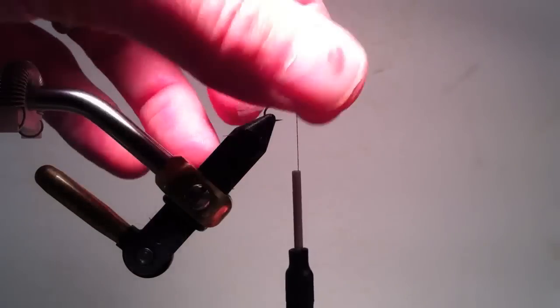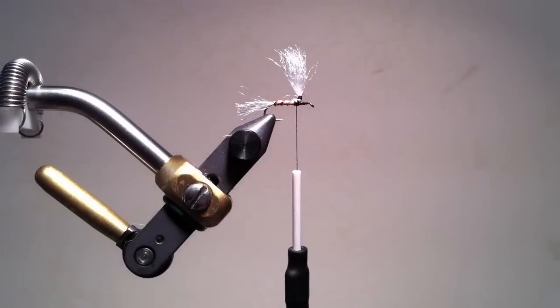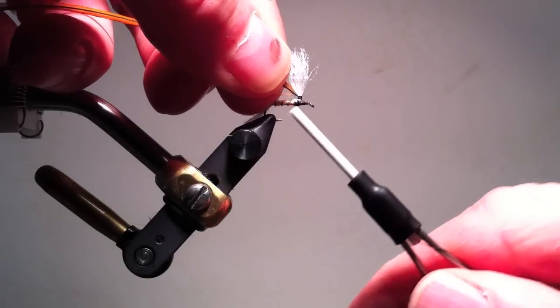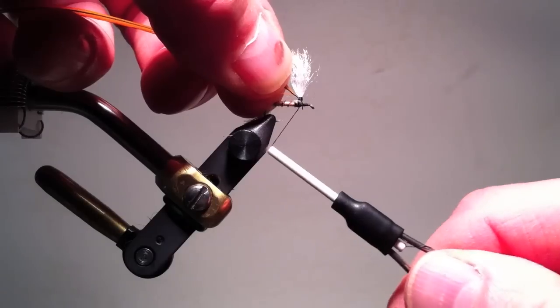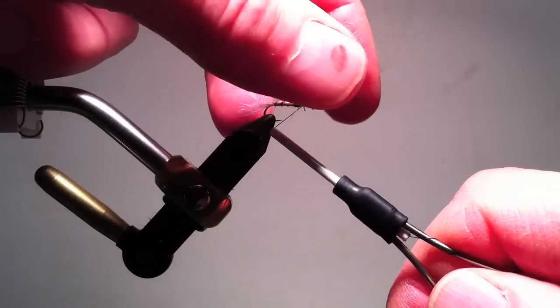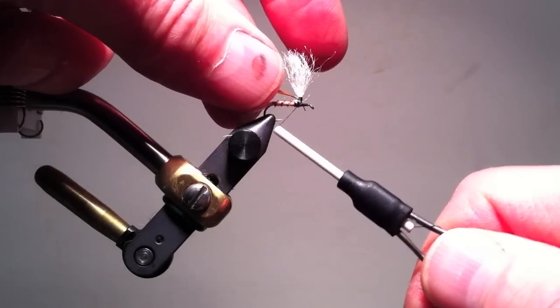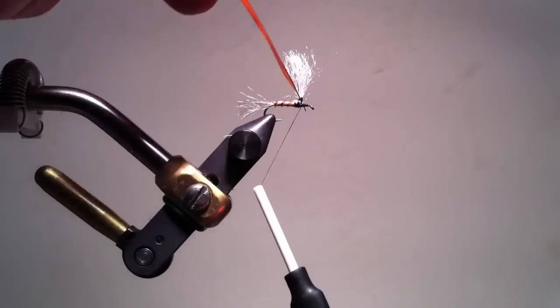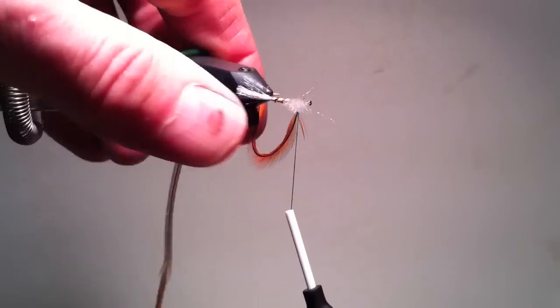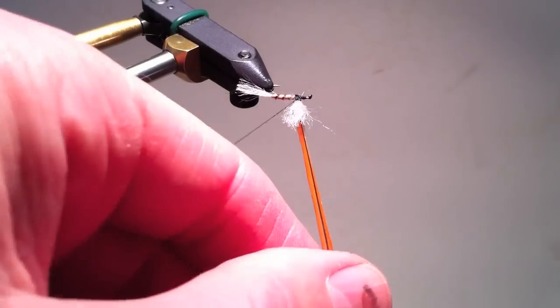Once I have that wound, I will add the hackle. Again, I strip some fibers from the stem of the hackle and measure it so that the fibers of the hackle will actually start at the top of my base. I then tie it in in front of the hook, getting my thread tight to the base of the post.